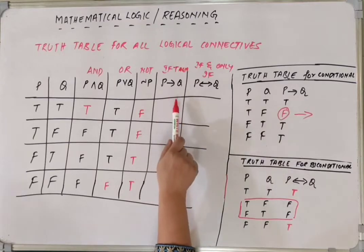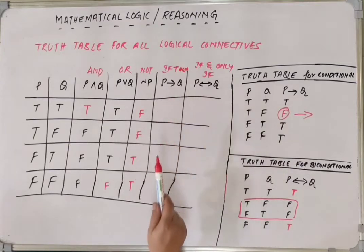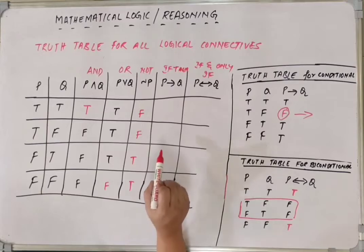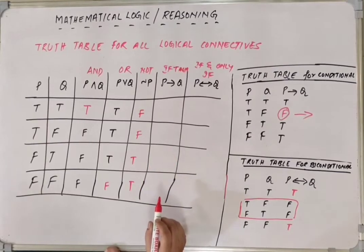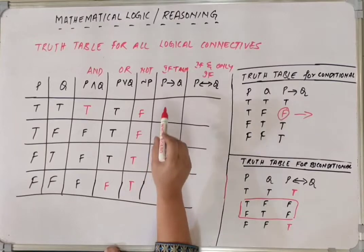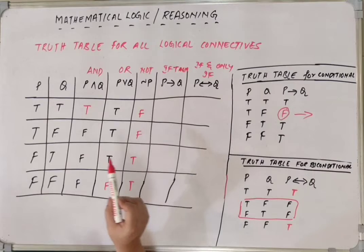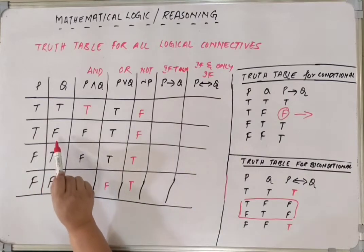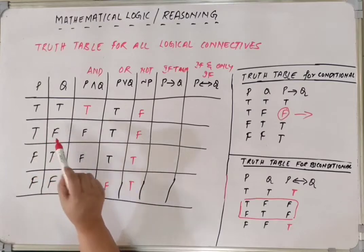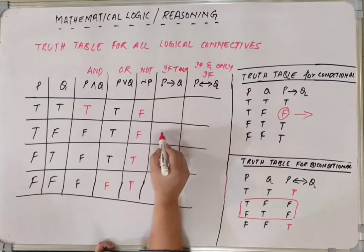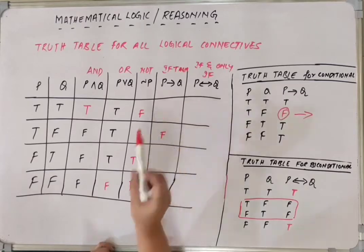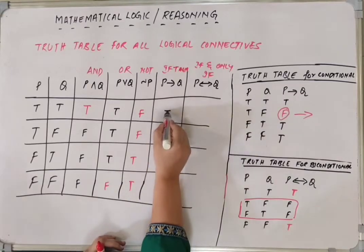The next one is P conditional Q. Seems little tricky but as we practice this becomes the simplest of all. Because this has only one condition one combination when P conditional Q is going to be false. And that is when P is true and Q is false. So basically if P is true Q cannot be false. If it is false then the result is going to be false. Everything else is going to be true.